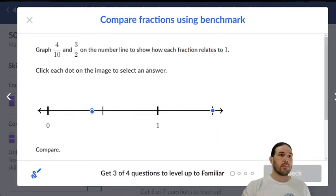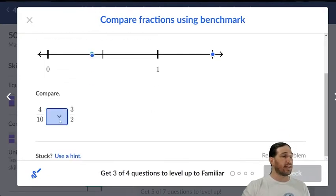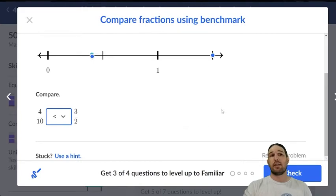So we got those two points, and now we need to compare. Four tenths is less than three over two.